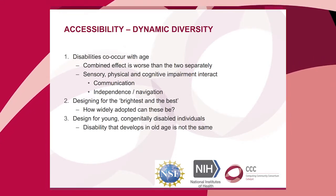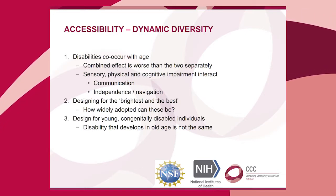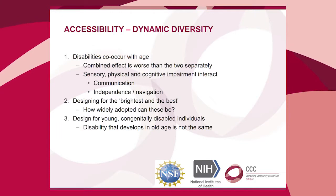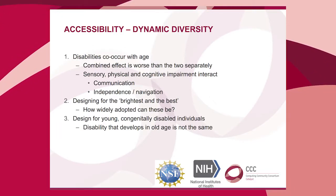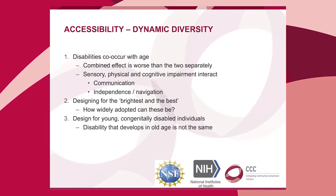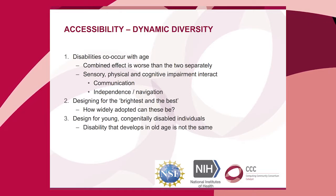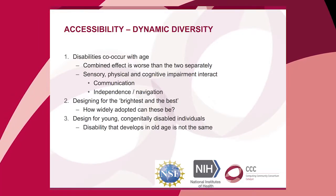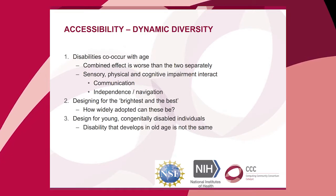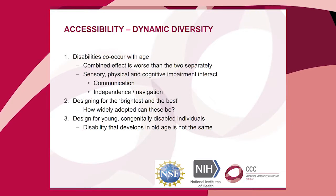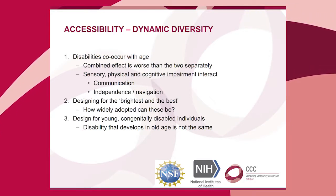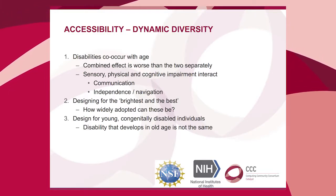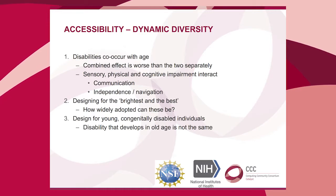The same applies to independence and mobility. Vision loss makes getting around hard, and mobility impairments — wheelchair or walker — compound things further. Potential memory loss means navigating independently is difficult, since you may not remember your route. And for all these cases, older adults tend to have more trouble learning new things, so learning new gadgets is tougher than for 20-year-olds.